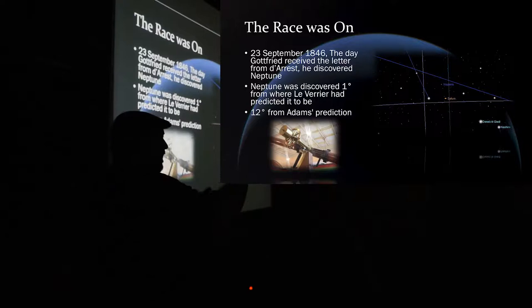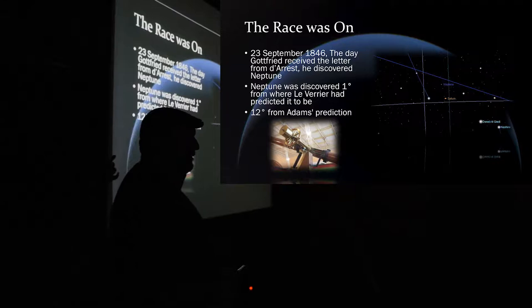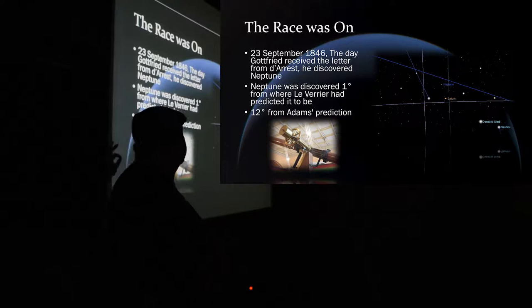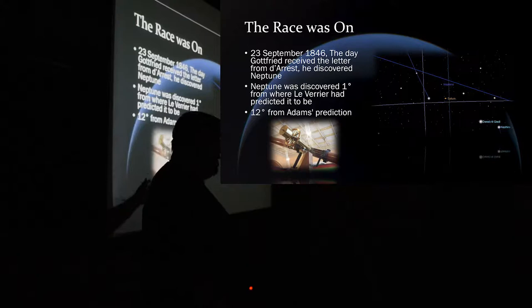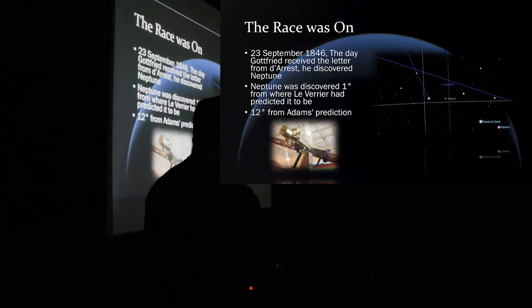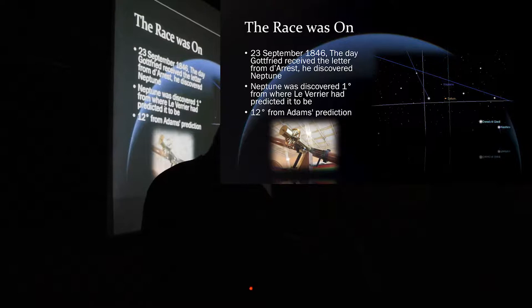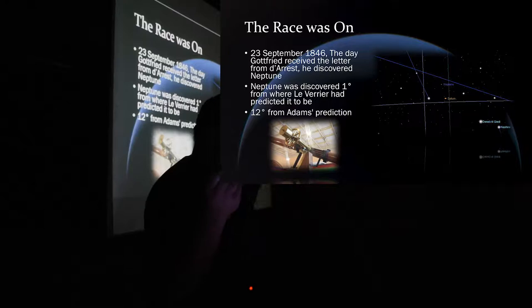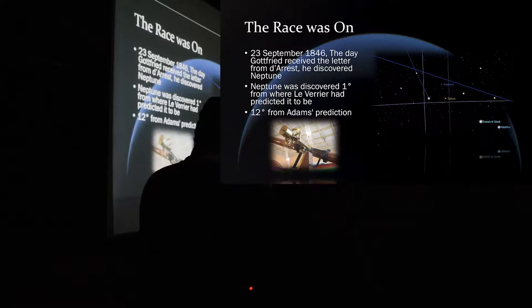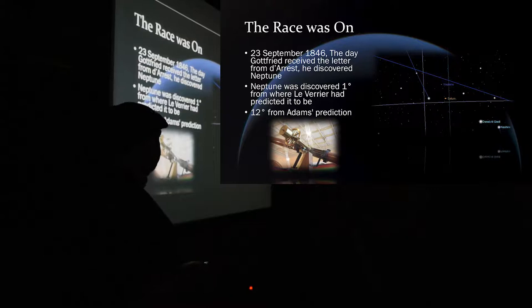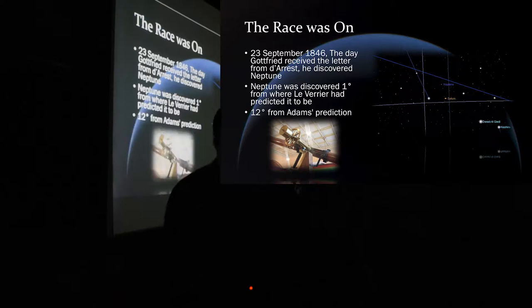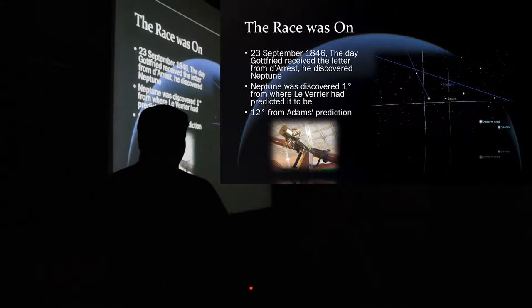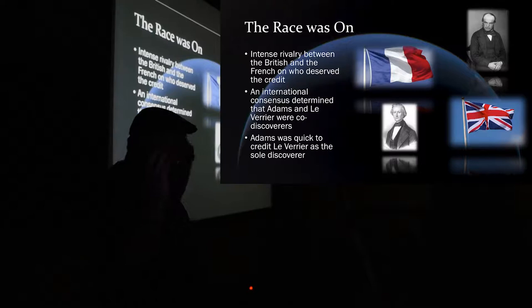In fact, this is the very star chart where, and I got a bigger version of that. This is the star chart that was done at the Berlin Observatory. And here is where it was predicted and this is where they found it. So the day that d'Arrest and Gottfried Galle got the letter, he discovered it. Le Verrier's prediction was much closer. It was one degree off of where it actually was. Adams was about 12 degrees off. This is, I went into the Sky X and I pulled back the timer to 23rd of September 1846 and that's where Neptune was. And this is Capricorn over here and this is Aquarius up here. So Neptune was discovered at this point in time.